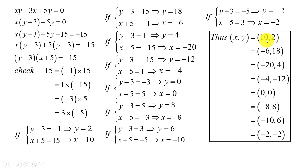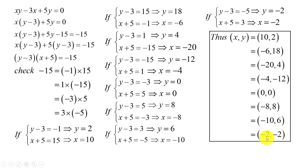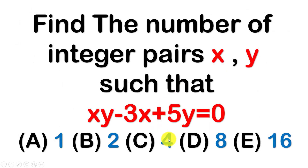Thus, the integer pairs (h, y) are: (10, 2), (negative 6, 18), (negative 20, 4), (negative 4, negative 12), (0, 0), (negative 8, 8), (negative 10, 6), and (negative 2, negative 2). That gives us 1, 2, 3, 4, 5, 6, 7, 8 — eight integer pairs. So the answer is d) 8 pairs of integer numbers h and y.